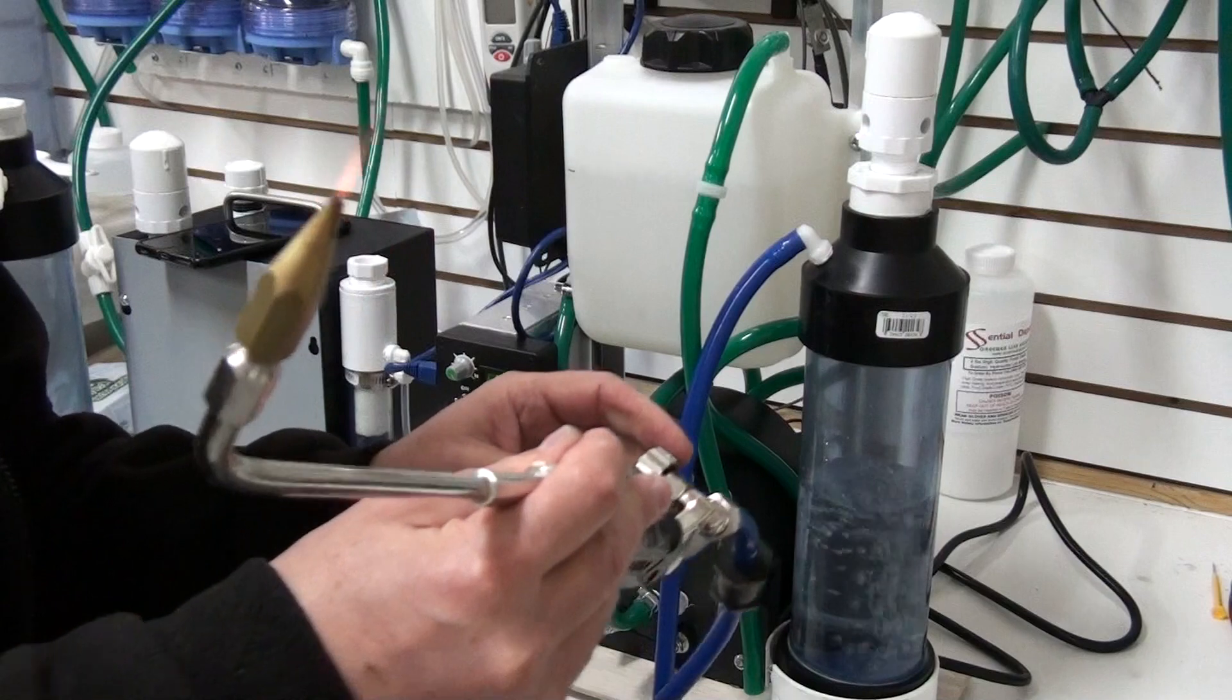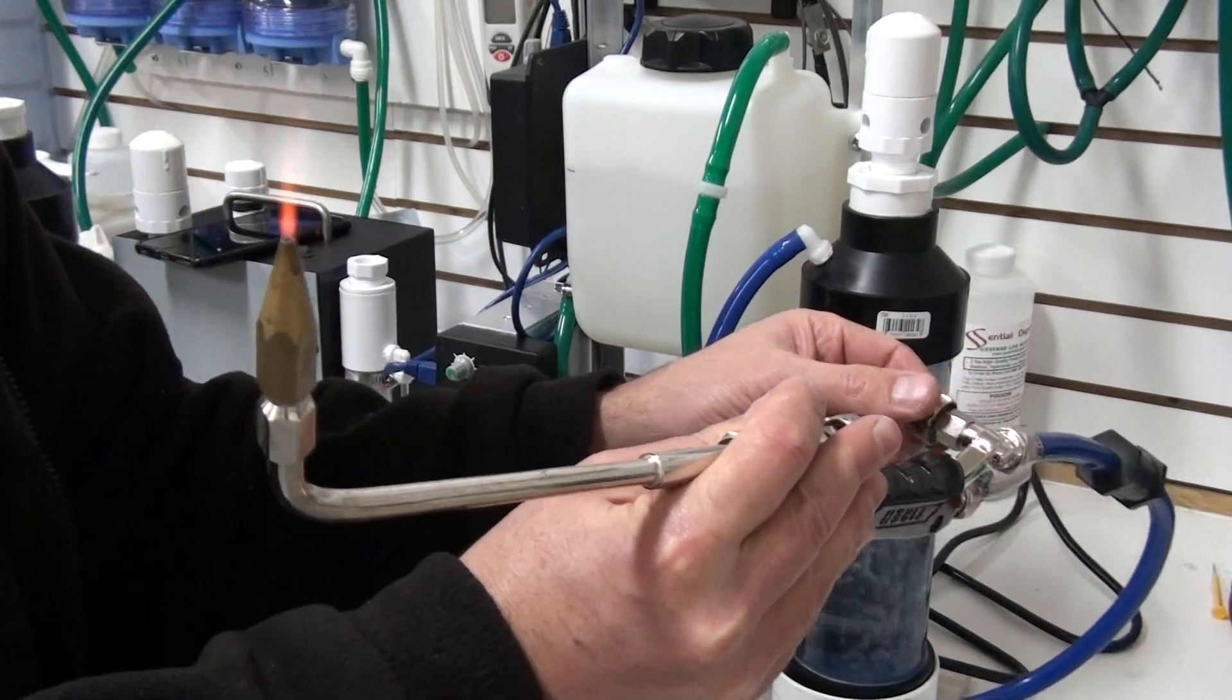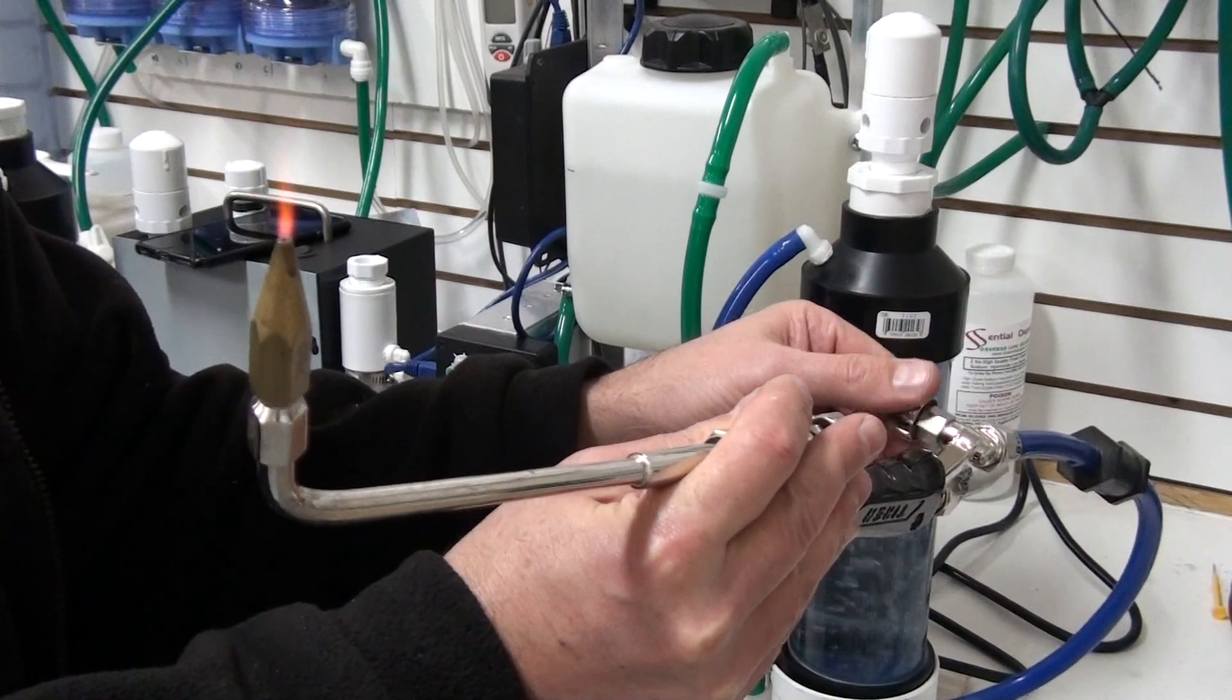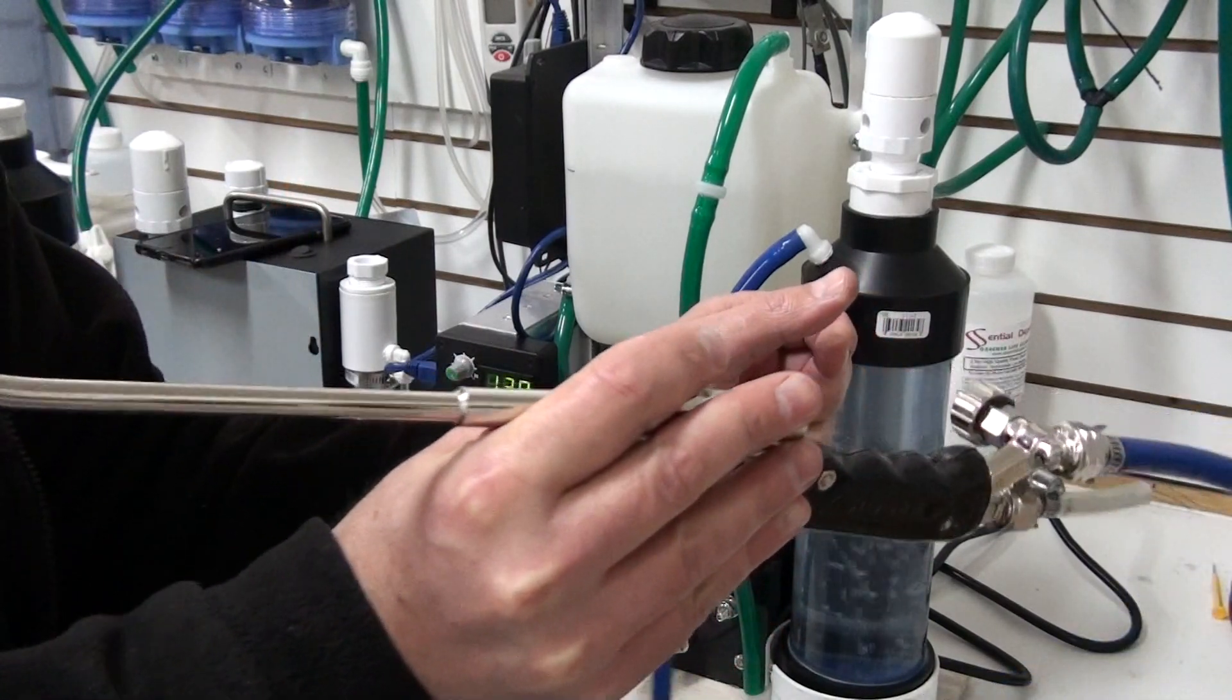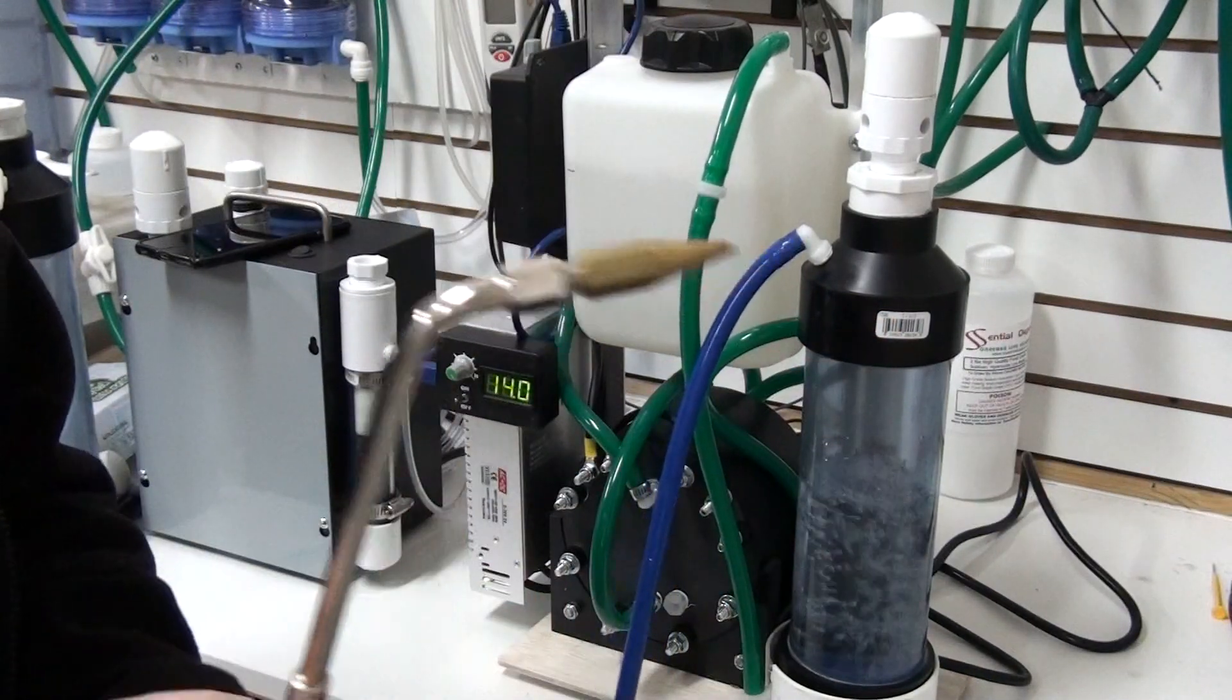And then when you go to turn off the flame, you turn it off. You'll get a small flashback there. And then you want to open up your valve. That way you don't build up any pressure in your tank.